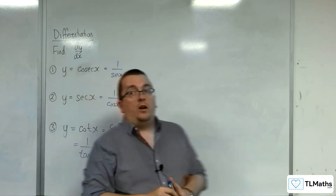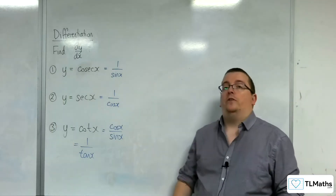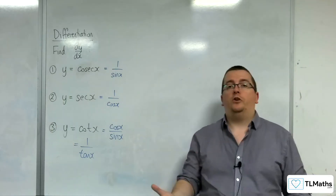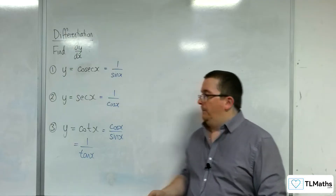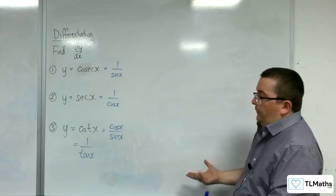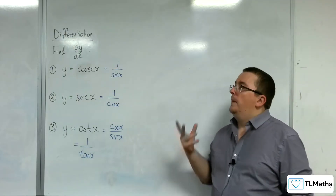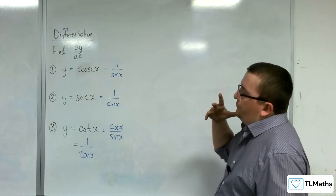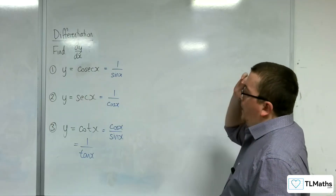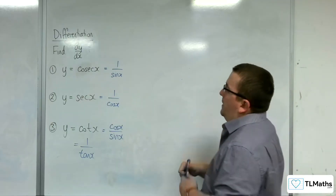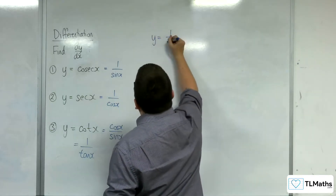Now, because each of these are written as fractions, you could use the quotient rule on each of them. And that's perfectly fine to do that. So, if we had a look at number 1: y equals 1 over sine x.